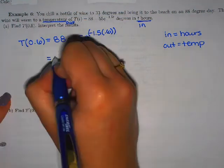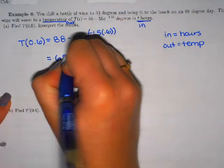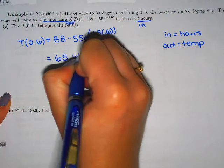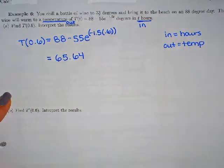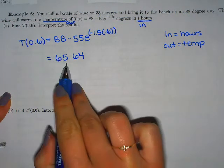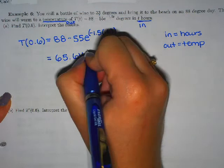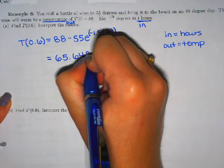What you should get is 65.64 what? Plug in 0.6 hours you get out 65.64 degrees.